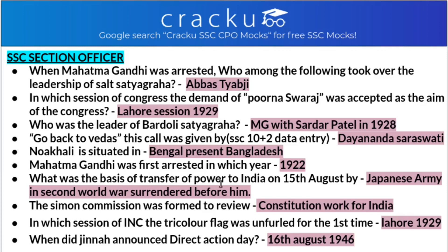Mahatma Gandhi was first arrested — and what was the basis of transfer of power to India on 15th August? The Mountbatten Plan came to India on 3rd June, followed by the Indian Independence Act of 1947. We were given independence on 15th August because on that day, after the Second World War, the Japanese army surrendered before Mountbatten and the British — so Mountbatten selected 15th August as Independence Day. The Simon Commission was formed to review the constitution work for India and the drawbacks of the Government of India Act 1919.